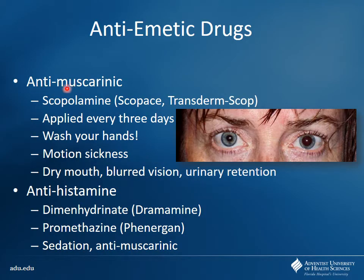The first drugs we're talking about are anti-muscarinic drugs. I should mention I redid this GI lecture and reposted it — I took out a couple of slides, mostly some of the Crohn's disease and ulcerative colitis material. The renal stuff I completely redid and reposted. Just FYI. Starting with our anti-muscarinic drugs — these are going to antagonize muscarinic receptors up in the chemoreceptor trigger zone.